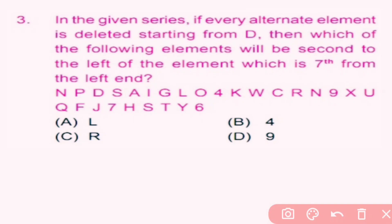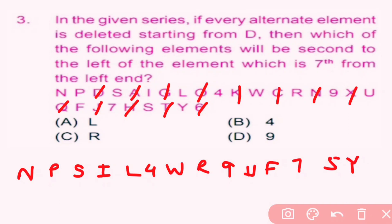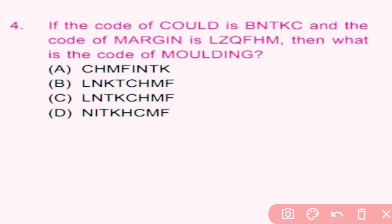Question number 3: In the given series, if every alternate element is deleted starting from D, which element will be second to the left of the element that is 7th from the left end? After deleting every alternate element starting from D, the new series is: A, G, O, K, C, N, X, Q, J, H, T, 6. Finding the 7th element from the left: 1, 2, 3, 4, 5, 6, 7 — that is W. The element second to the left of W is L. So A is the correct answer.